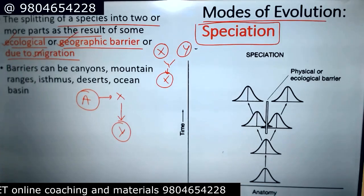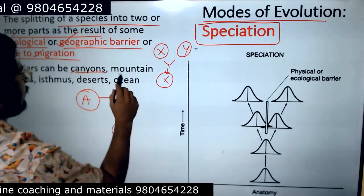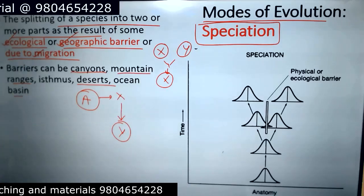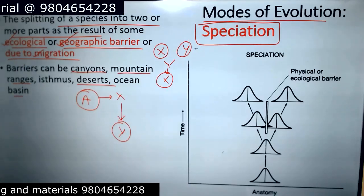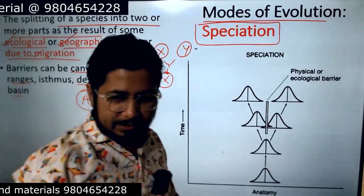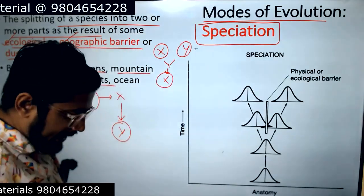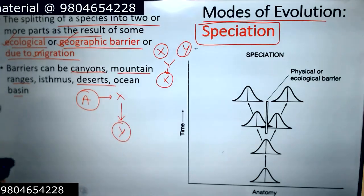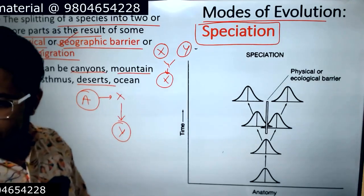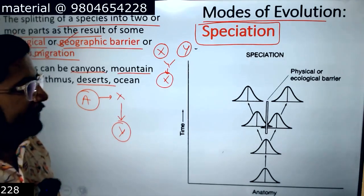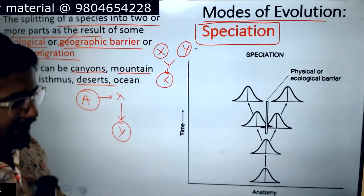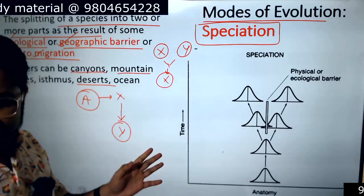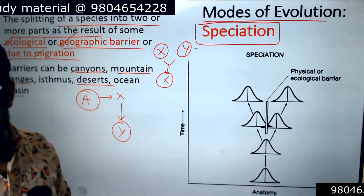Barriers can be different things like canyons, mountain ranges, deserts, oceans, and many more. So there can be physical barriers and environmental barriers. Physical and environmental barriers can separate organisms from each other.